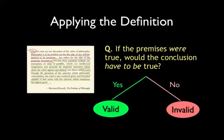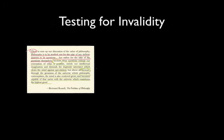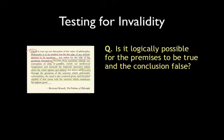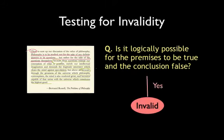It can also help to apply the definition of validity differently. Try asking this: is it logically possible for the premises to be true and the conclusion false? With this question, we're asking whether the argument is invalid. To answer this question, we think of different logically possible scenarios and try to find one that makes the premises true and the conclusion false. If we can find such a scenario, the argument is invalid.